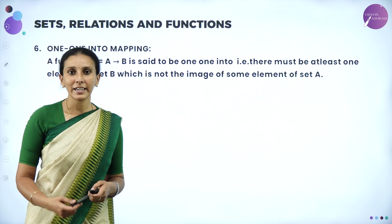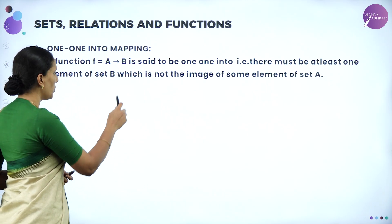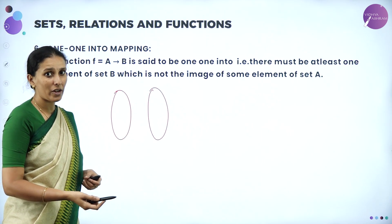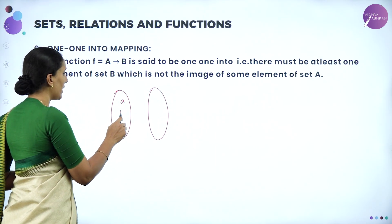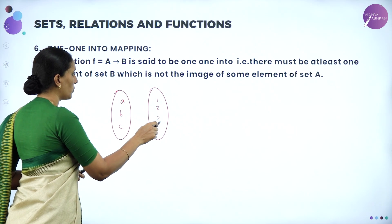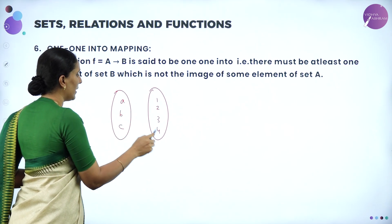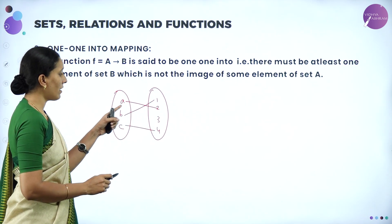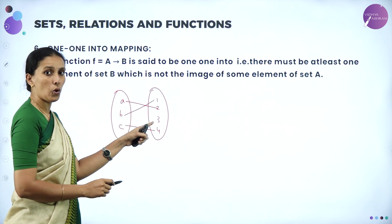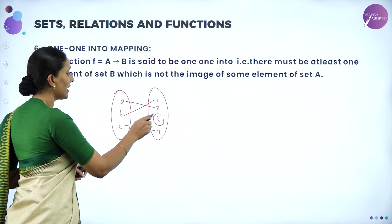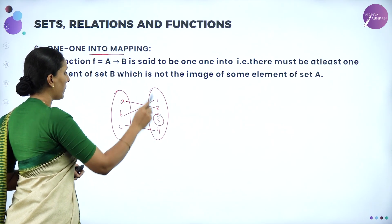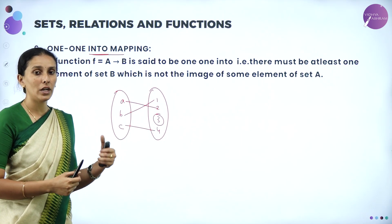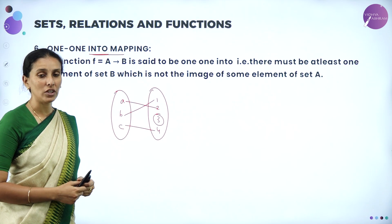One-one into mapping satisfies one-one condition but does not satisfy onto condition. For example, with A = {A,B,C} and B = {1,2,3,4}: connect A to 2, B to 1, C to 4. This is one-one because all images are different. But it is not onto because 3 is free in the second set — it has no pre-image. According to into mapping, there must be at least one free element in the second set that does not have any pre-image in the first set.